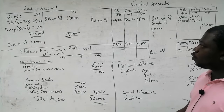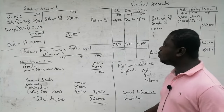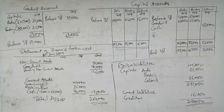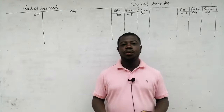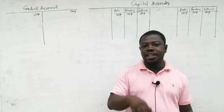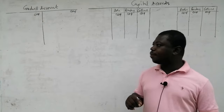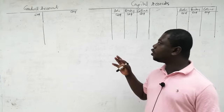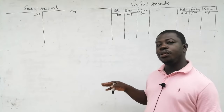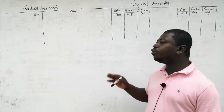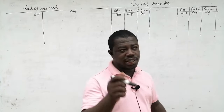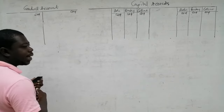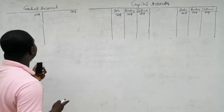This is how we handle the situation where Goodwill is maintained in the books. Now we are going to solve the same question again, but this time from the situation where Goodwill is not to be maintained in the books, or Goodwill is to be written off. We will prepare the Goodwill account again and write off Goodwill from the books.